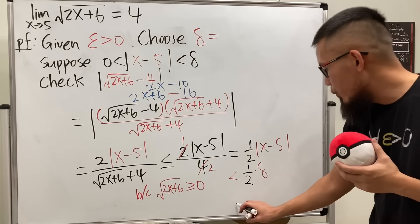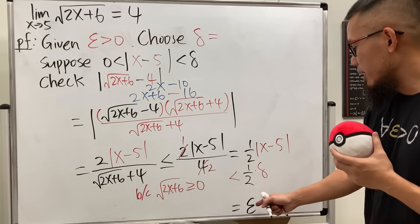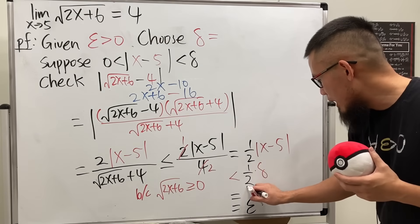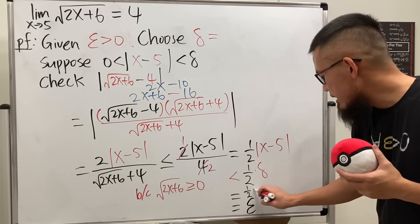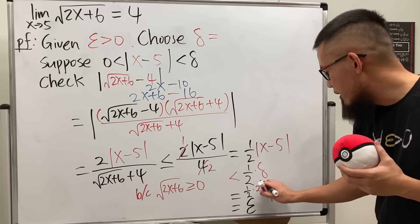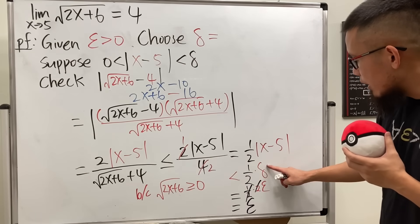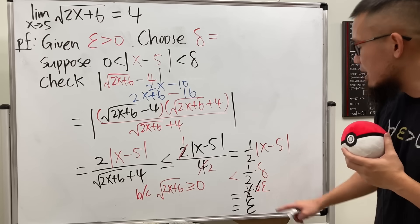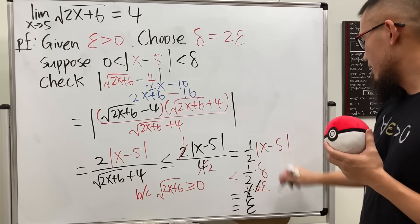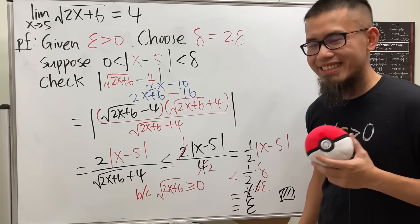We want (1/2)·delta to equal epsilon. If delta equals 2·epsilon, then (1/2) and 2 cancel and we end up with epsilon. So delta should be 2·epsilon. Come back and fill in delta = 2·epsilon, and we are done.